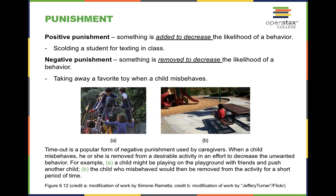When it comes to positive punishment and negative punishment: positive punishment is adding something to the situation to make a behavior less likely to occur. Negative punishment is removing something to make a behavior less likely to occur. With positive punishment, you're typically adding an unpleasant stimulus to decrease a behavior. With negative punishment, you're removing something pleasant to make a behavior less likely to occur.